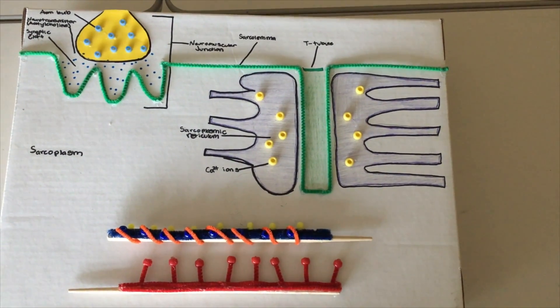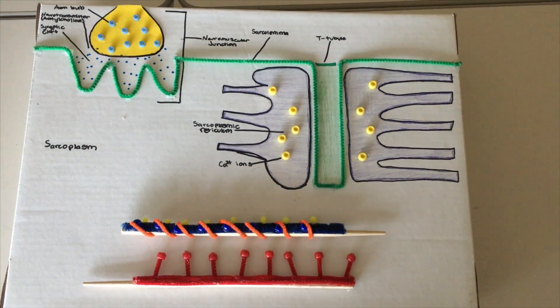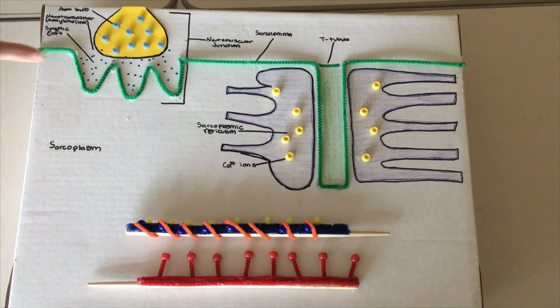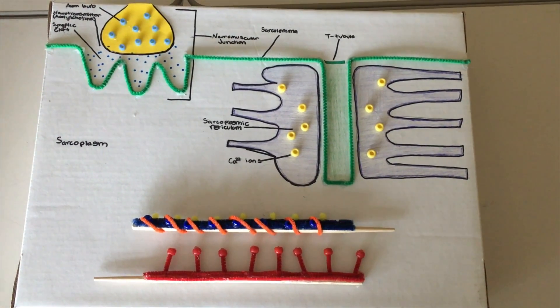Skeletal muscles will contract or relax when they receive electrical signals via action potentials from the nervous system. A neuromuscular junction is the site of the signal exchange. This is where the synaptic bulb of an axon terminal and muscle fiber connect.